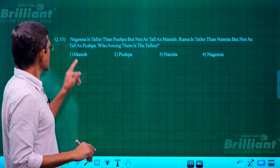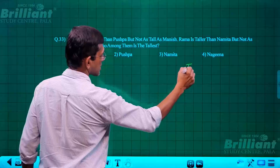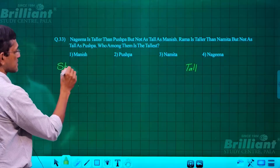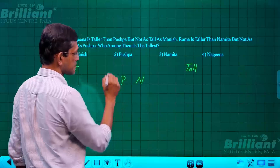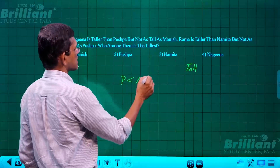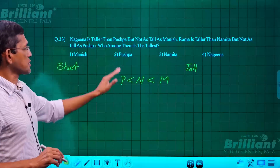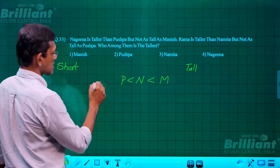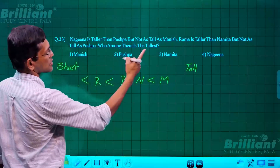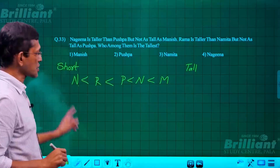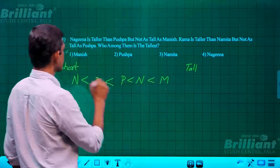Question 33 is an ordering type question. Nagina is taller than Pushba. The tallest person is on the right, the shortest on the left. Nagina is taller than Pushba but not as tall as Manish. Rama is taller than Namita but not as tall as Pushba. Among them all, who is the tallest? It's Manish. So Manish is the answer.